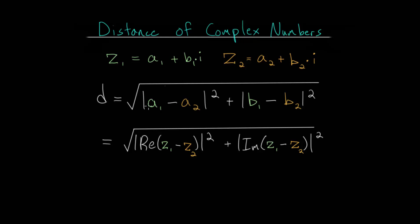essentially asks us to find the difference between the real parts, A1 and A2, and we will take the absolute value of that so that we get a positive number and we will square that, and then add that to the difference between the imaginary parts, B1 and B2.